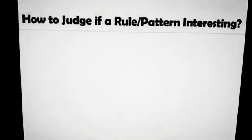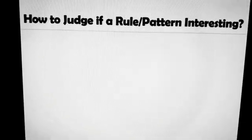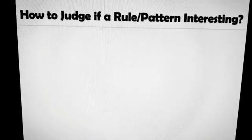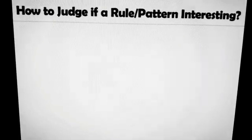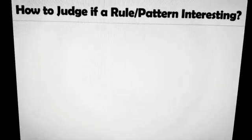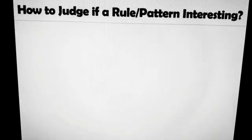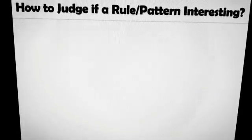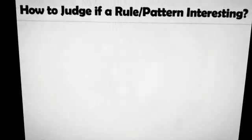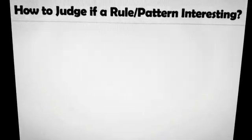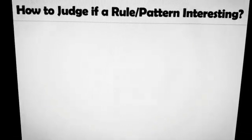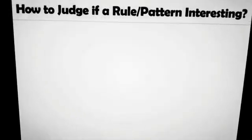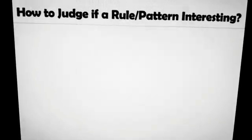The topic of today's video is how to judge if a rule or pattern is interesting or not. We have to remember our association rules — we discussed how to generate association rules and how to mine them with factors like confidence and support. In this video we'll see whether the rules we have generated are always interesting, always applicable, or always valid. If applicable or valid, we say it is interesting, but sometimes it is not.